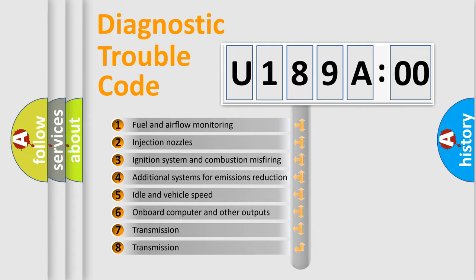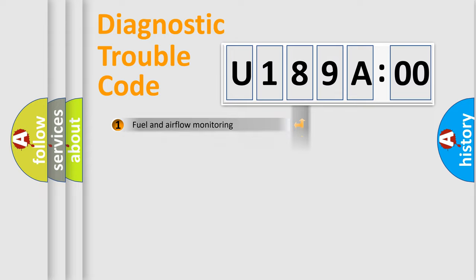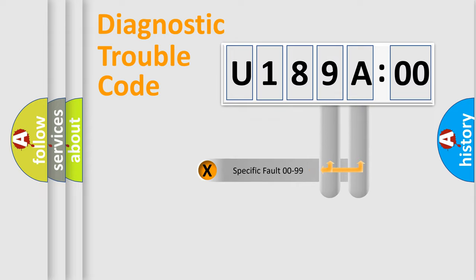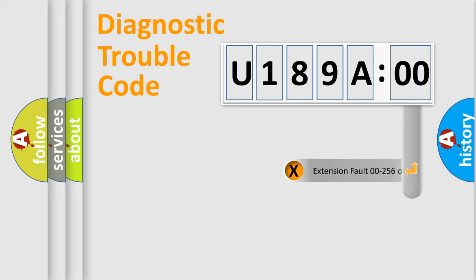The third character specifies a subset of errors. The distribution shown is valid only for the standardized DTC code. Only the last two characters define the specific fault of the group.